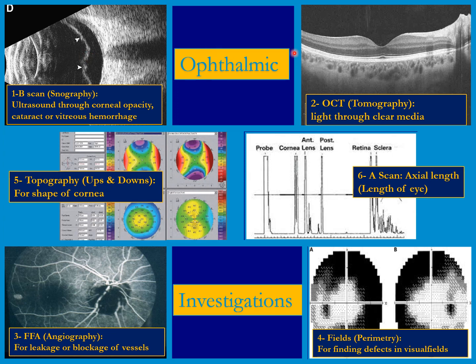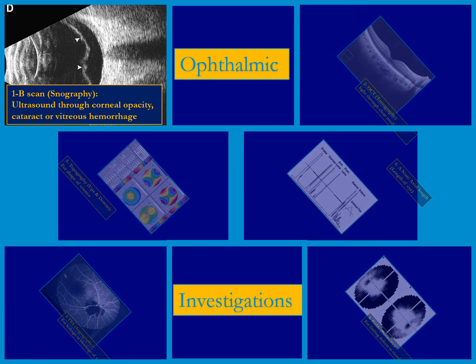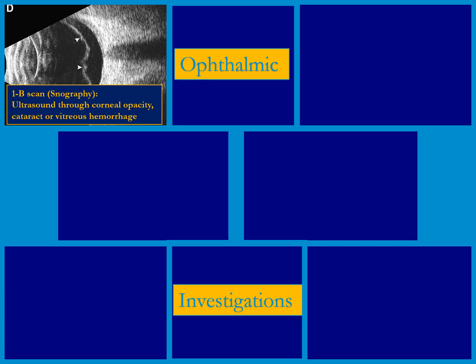These are the common ophthalmic investigations. Number one is B-scan. Number two, we call it OCT. Number three is FFA. Number four is visual field. Number five is corneal topography. And number six is A-scan. So first of all, we are going to discuss B-scan or sonography.